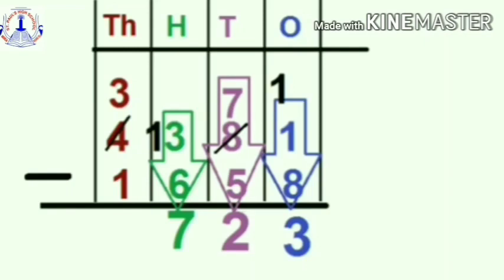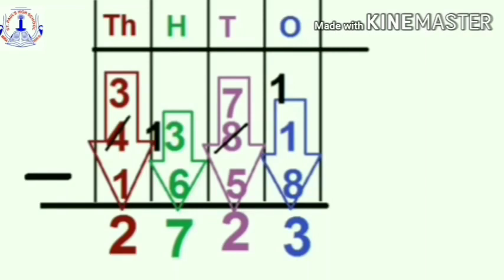So, students, now in the thousands place: 3 minus 1. You can subtract 1 from 3 because 1 is a smaller number. So, 3 minus 1 is 2. Have you all understood? If a number cannot be subtracted, you have to borrow one number from the neighbor — that is, from the next place, the next digit. So, your answer for this is 2,723. Have you all understood the borrowing method? Yes.